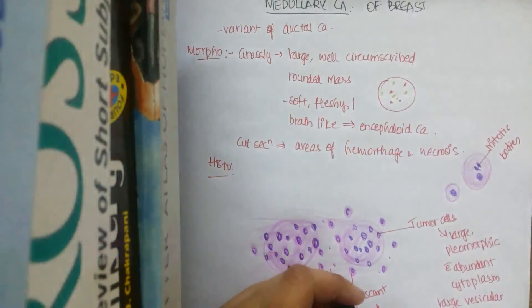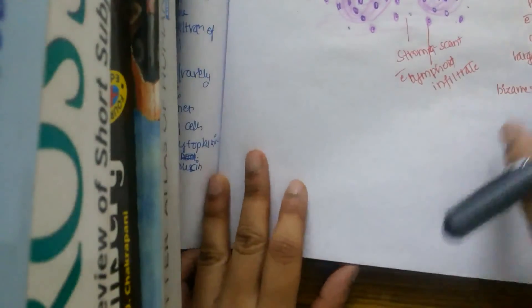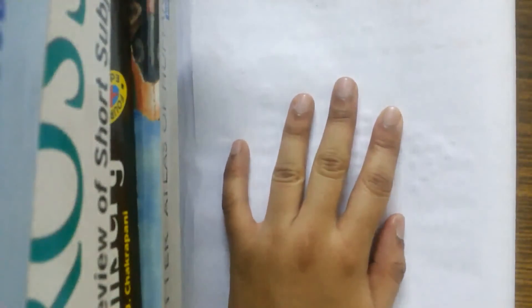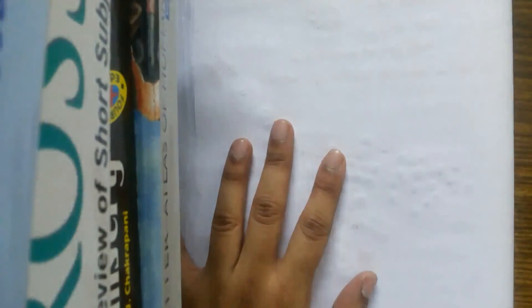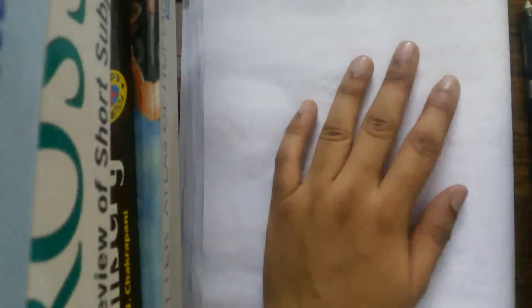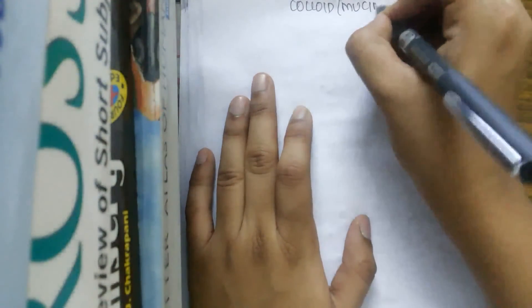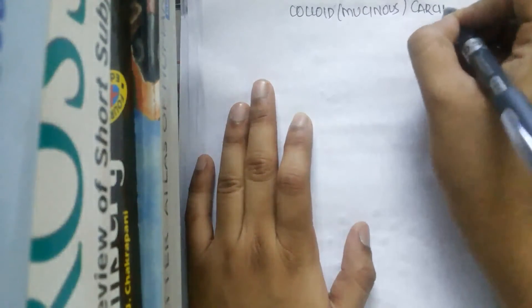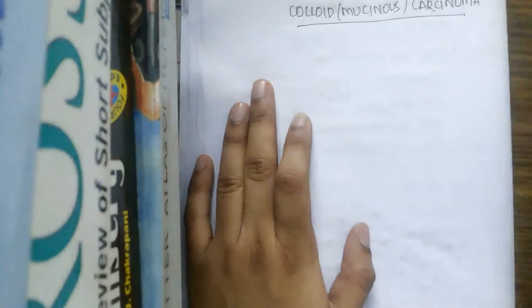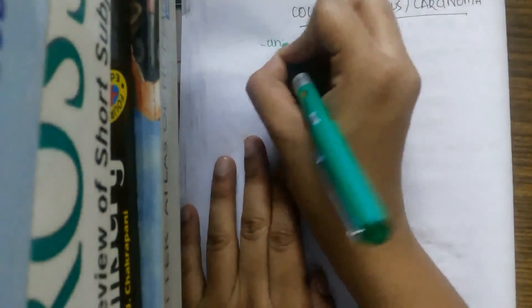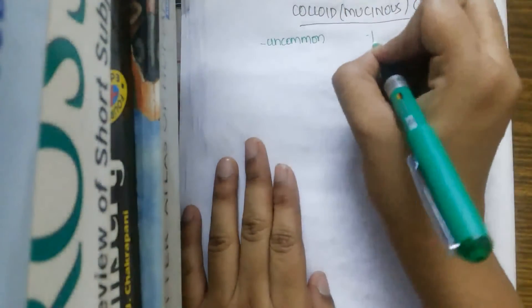Next, let us deal with another carcinoma of the breast — colloid carcinoma, also called mucinous carcinoma of the breast. Colloid or mucinous carcinoma is mostly uncommon in the breast and it has a better prognosis.